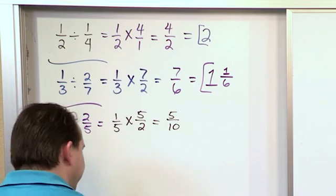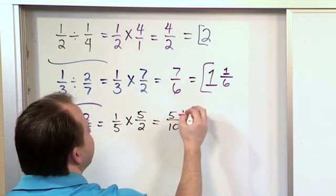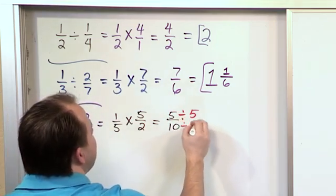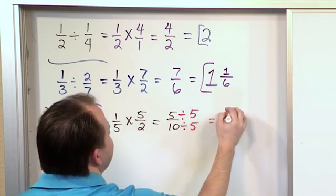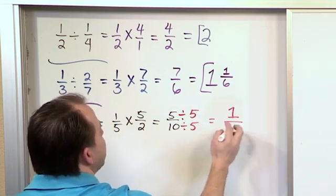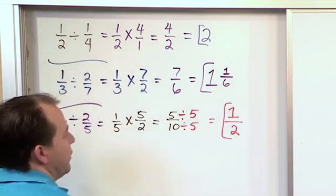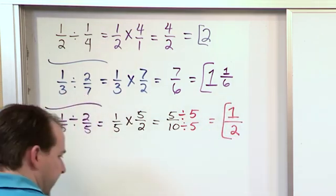So we're about ready to circle that but then we notice, wait a minute. We can simplify this by dividing the top by 5 and the bottom by 5. 5 divided by 5 is 1. 10 divided by 5 is 2. And so you have 1 half.